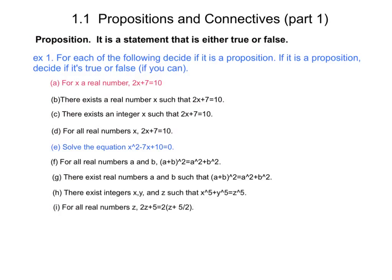In other words a specific x for which 2x plus 7 is not equal to 10. For example, x equal to 0 is a counterexample to this sentence here.